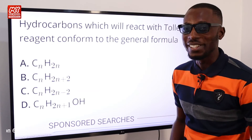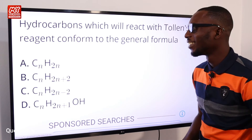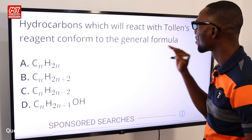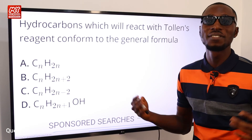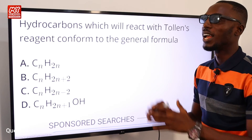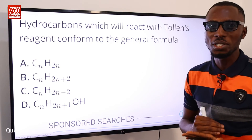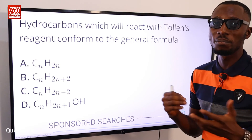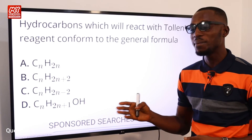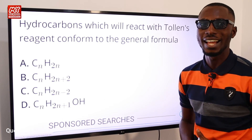Question six: hydrocarbons which will react with Tollens' reagent conform to which general formula? Anytime Tollens' reagent is used — also called the silver mirror test — the hydrocarbons that react are called aldehydes. Aldehydes have the general formula CₙH₂ₙ₊₁OH with the hydroxy group. So our answer is D.